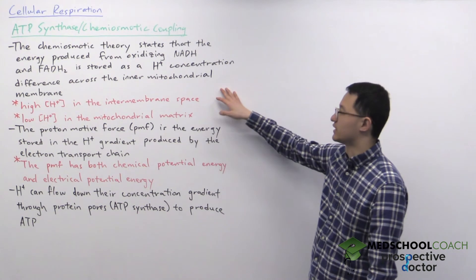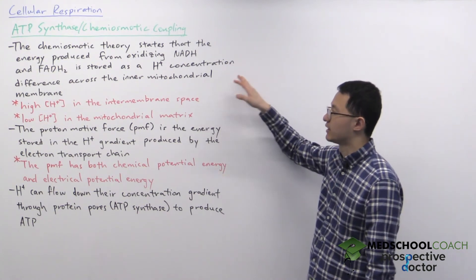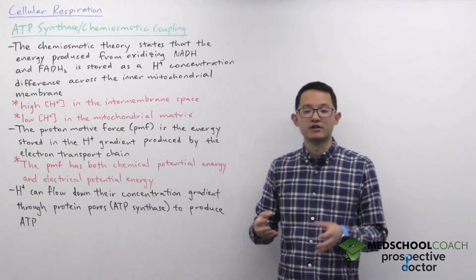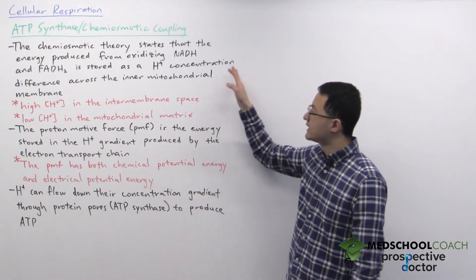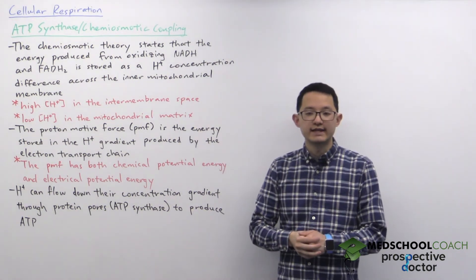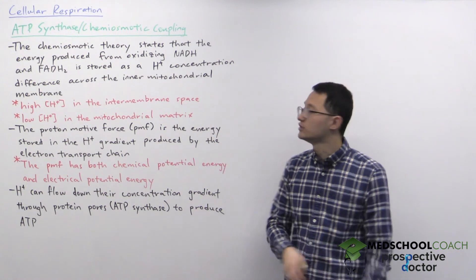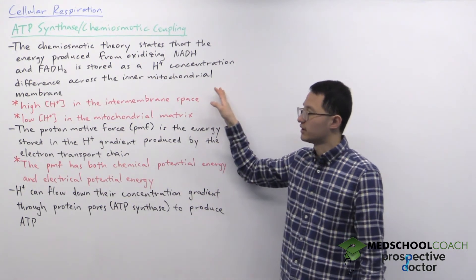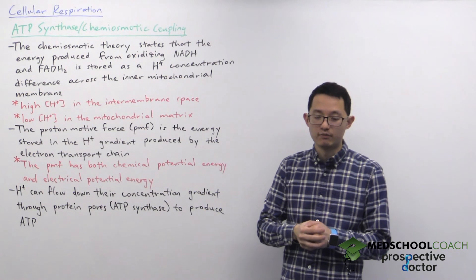So a couple terms here. First, chemiosmotic coupling. This is based on the chemiosmotic theory which states that the energy produced from oxidizing NADH and FADH2 is stored as a proton concentration difference across the inner mitochondrial membrane.